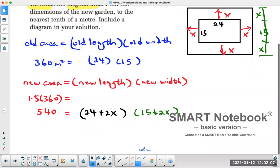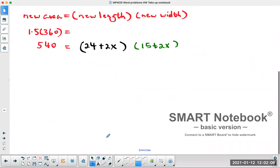So here, you've got your quadratic equation set up. The new area, 540, equals the new length, 24 plus 2x, times the new width, 15 plus 2x. And then you're going to solve for the value of x.